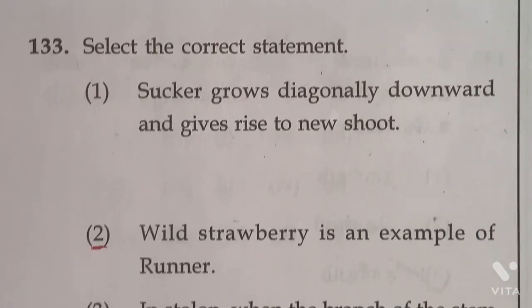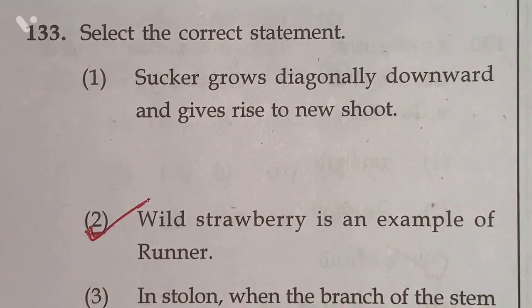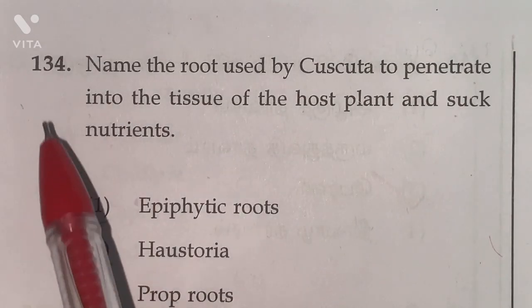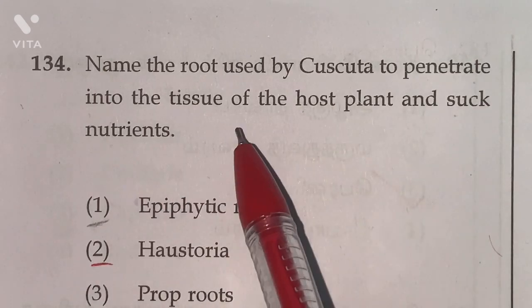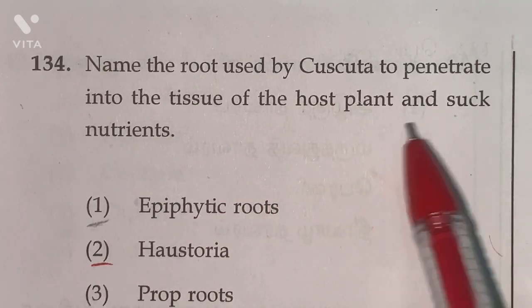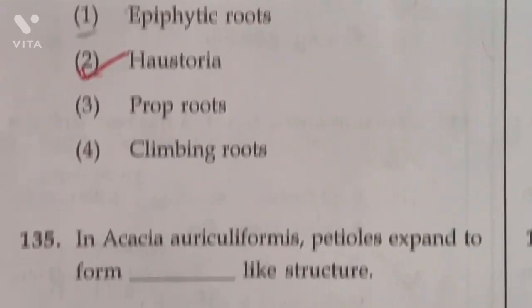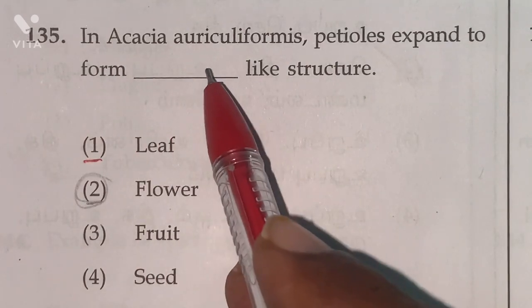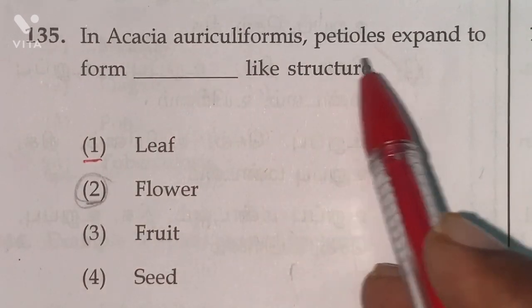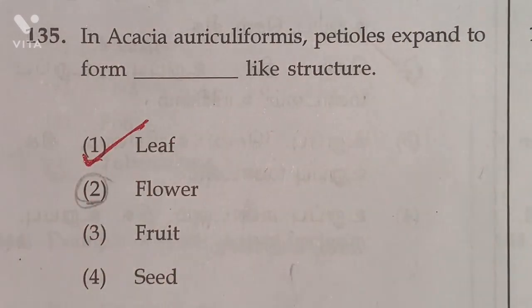Question number 133. Select the correct statement. Wild strawberry is an example of runner. Option 2 is the right answer. Question number 134. Name the root used by Cuscuta to penetrate into the tissue of the host plant and suck nutrients. Haustoria. Option 2 is the right answer. Question number 135. In Acacia auriculiformis petioles expand to form leaf-like structure. Option 1 is the right answer.